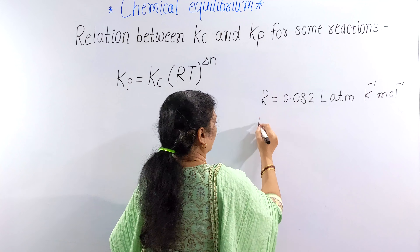The value of R is constant, and T is the absolute temperature. If temperature is constant, what is the relation between Kp and Kc? We shall determine this in this video for some reactions.